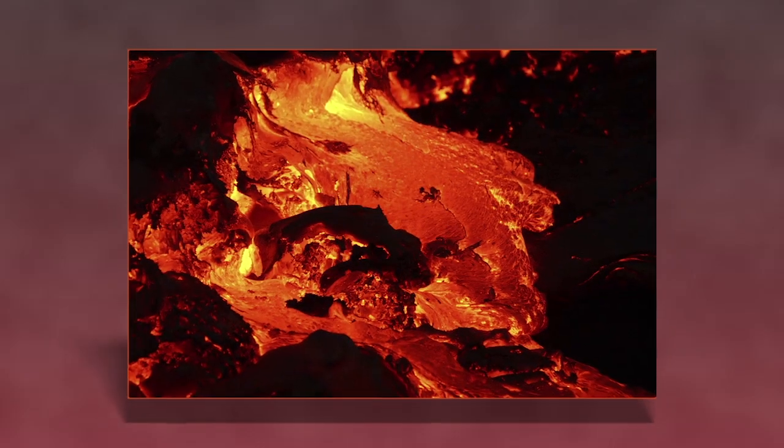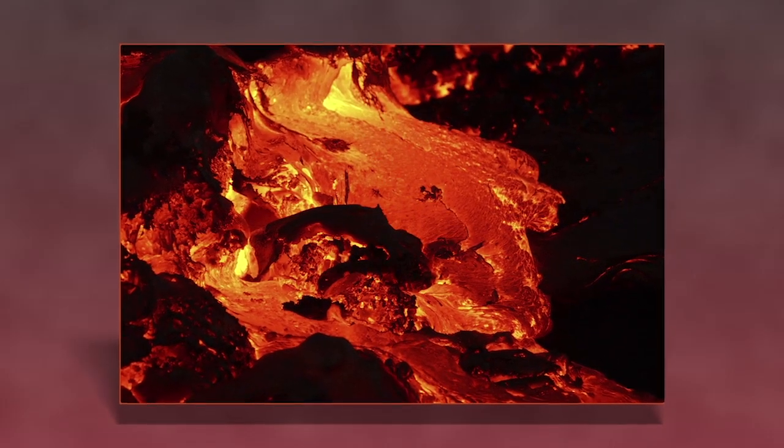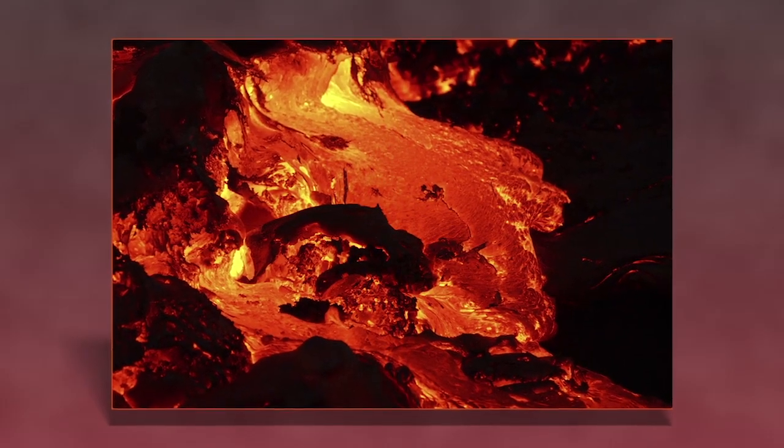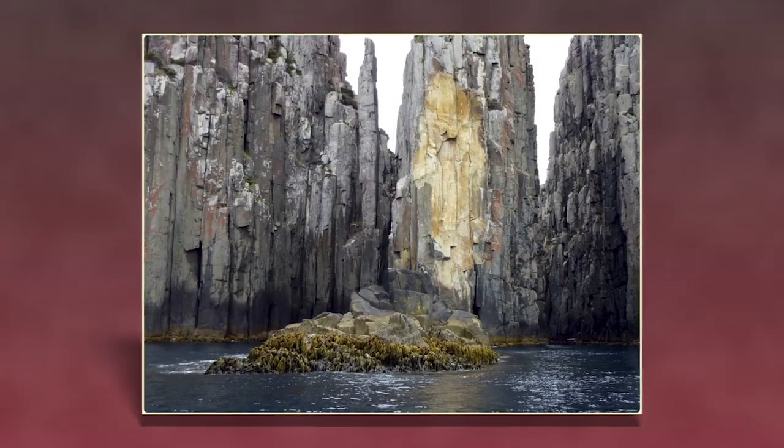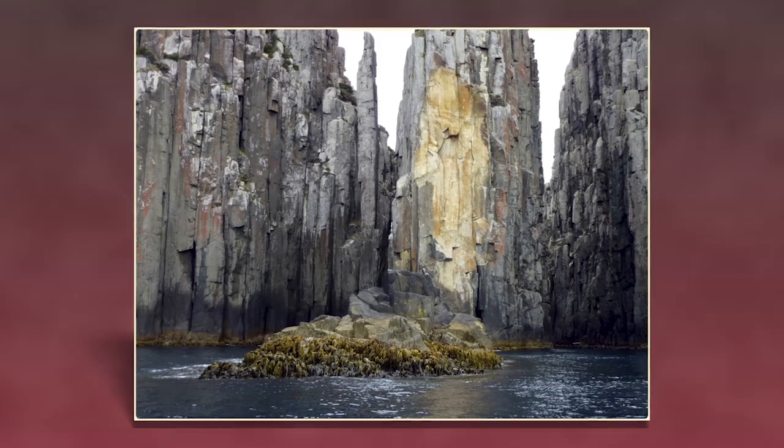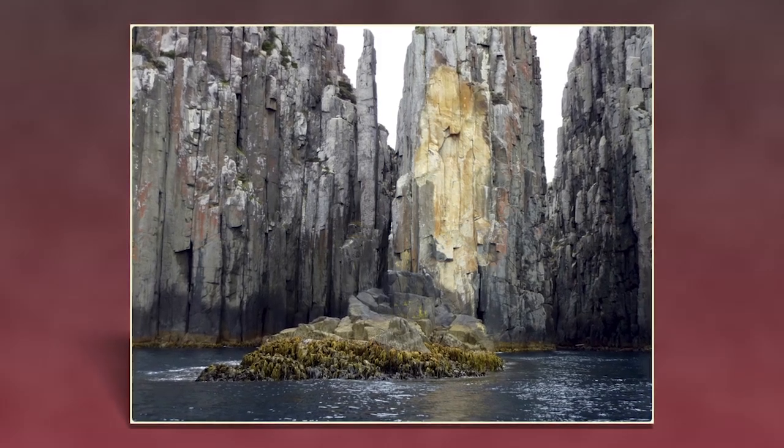When lava cools, it forms igneous rock. Over time, this rock builds up and creates a variety of landforms.